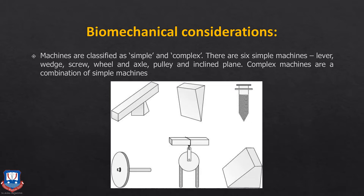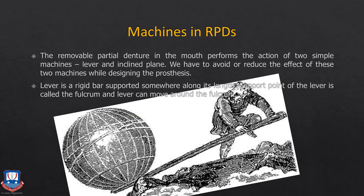Machines are classified as simple and complex based on their designs. There are six simple machines: a lever, a wedge which acts as a fulcrum, a screw, a disc, a pulley, and an inclined plane. Of these, the ones of particular interest in RPD design are the lever and the inclined plane principle. We have to avoid or reduce the effect of these two machines while designing the cast partial denture framework.